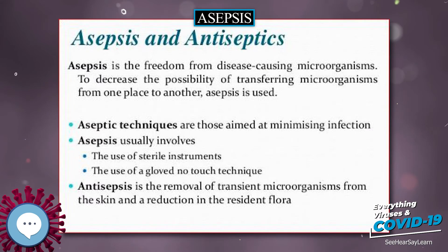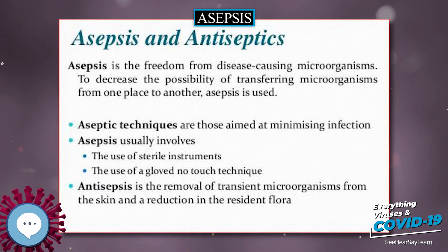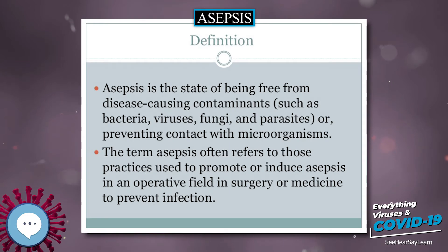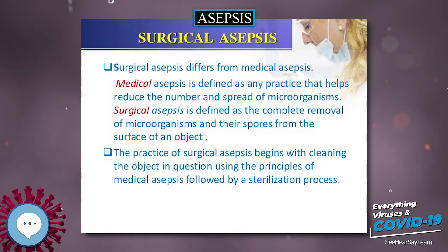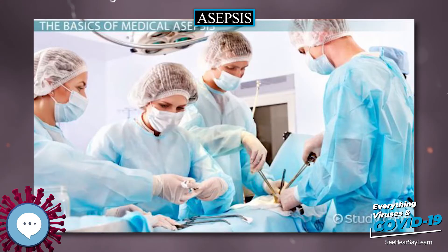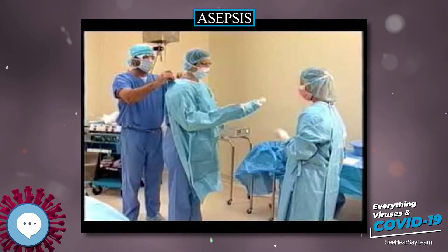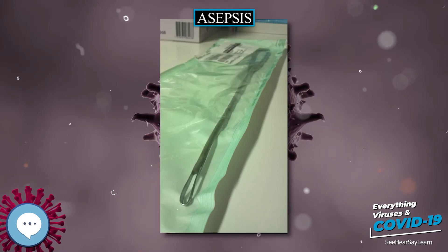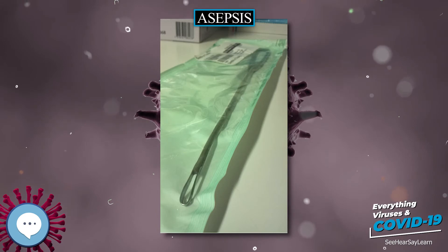The modern concept of asepsis evolved in the 19th century. Ignaz Semmelweis showed that hand washing prior to delivery reduced puerperal fever. After the suggestion by Louis Pasteur, Joseph Lister, 1st Baron Lister, introduced the use of carbolic acid as an antiseptic, and in doing so reduced surgical infection rates, introducing principles that have remained valid to this day.